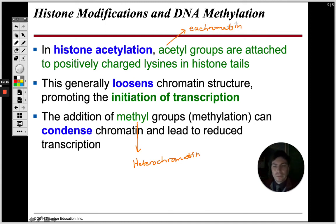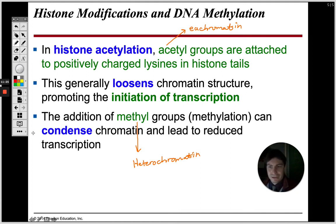We have heterochromatin, which is highly coiled around our histones. We also have euchromatin — E-U-C-H-R-O-M-A-T-I-N. Those are our two different types of chromatin.